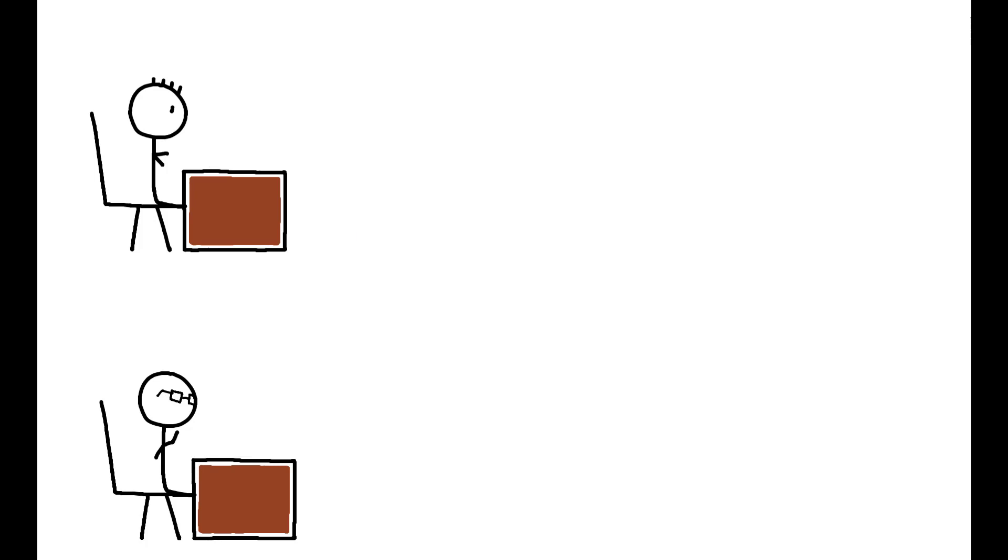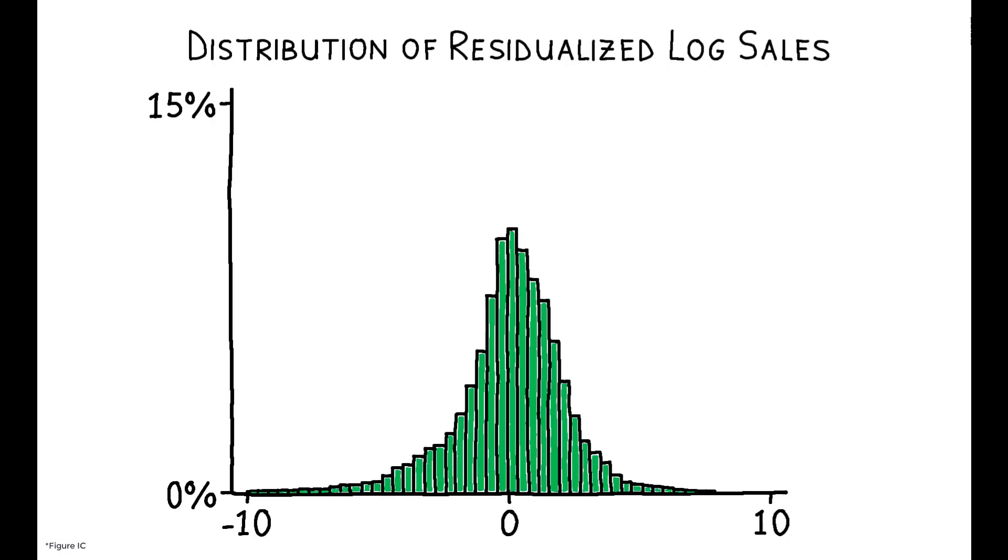Here, sales performance is measured using the total dollar value of sales to which an individual has contributed after netting out firm year-month-level effects. Among those in the same firm and in the same year-month, a worker in the 75th percentile of performance generates 11.5 times as much revenue as one in the 25th percentile.